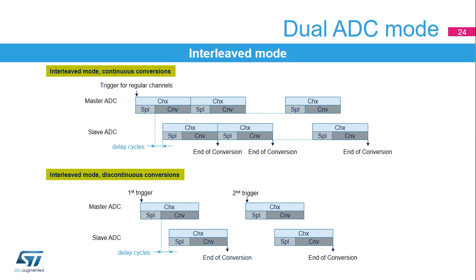Interleaved mode converts a regular channel group, usually one channel. The external trigger source, which starts the conversion, comes from ADC master. ADC master starts immediately. ADC slave starts after a configurable delay after the end of the sampling of the master. It prevents an ADC from starting a conversion while the complementary ADC is still sampling the input. An EOC is generated at the end of each channel conversion. In discontinuous mode, every simultaneous conversion requires a regular trigger.